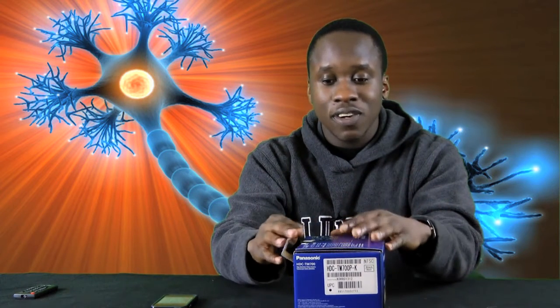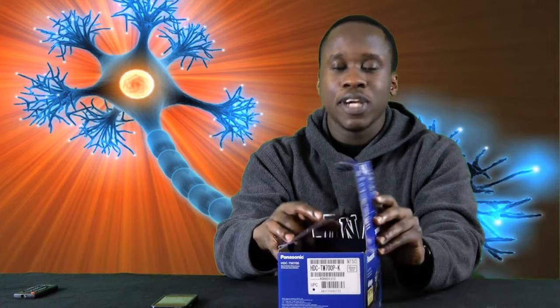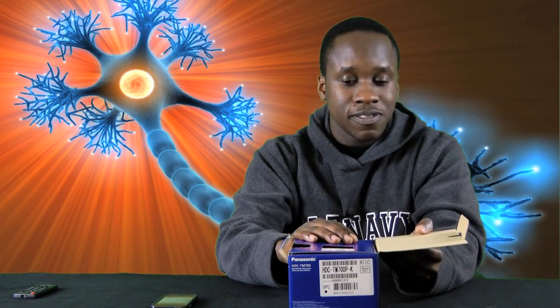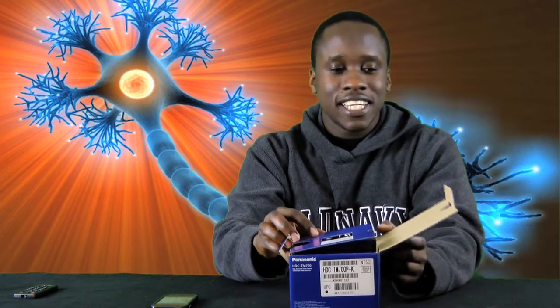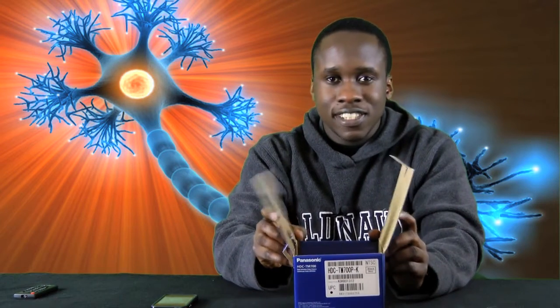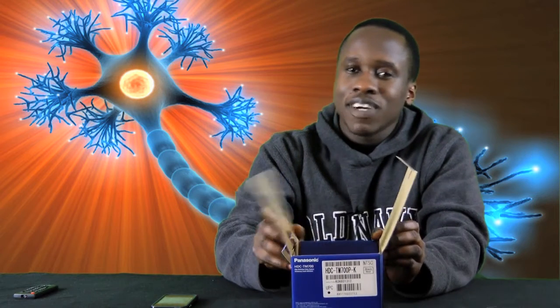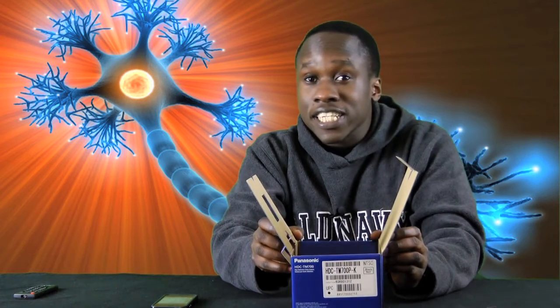There are three states that this box can be in. It can be closed which you can see right now, and it can be open, and it can be inactivated. And the way this works is we have two gates. I'm going to call this the activation gate and I'm going to call this the inactivation gate.